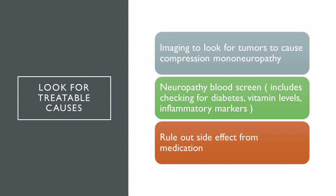Once we've identified the type of neuropathy, we look for any treatable cause. Is there a tumor causing nerve compression that could potentially be removed? Are there systemic factors — diabetes, vitamin deficiencies, medications — that could worsen the neuropathy? Looking for everything treatable is the most important step.